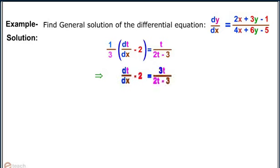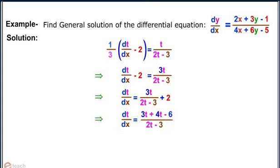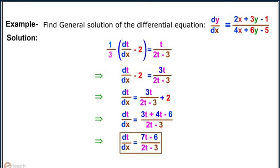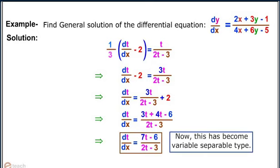Therefore, dt/dx = 3t/(2t − 3) + 2. Therefore, dt/dx = (3t + 4t − 6) / (2t − 3). Therefore, dt/dx = (7t − 6) / (2t − 3). Now this has become variable separable type.